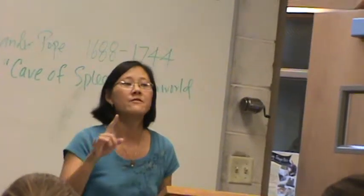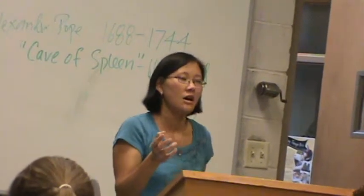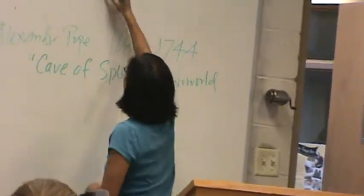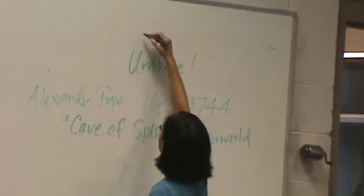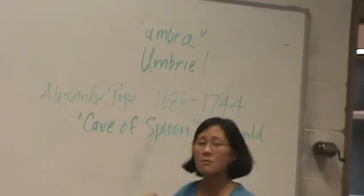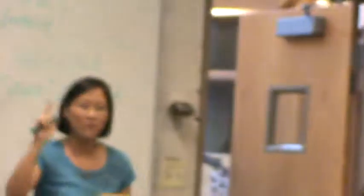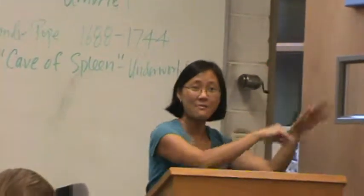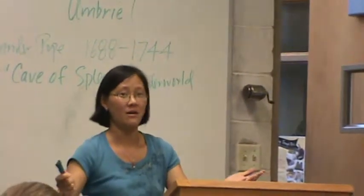So Ariel the sylph is good, and then we've got the bad guy — Umbriel. Now that's hard to say. Does anybody have romantic language backgrounds? Umbra — Italian, or romantic language for shadow. So automatically you've got light, goodness, fluffy, happy — and then you've got Umbriel: dark, shadow, bad. He's a gnome.